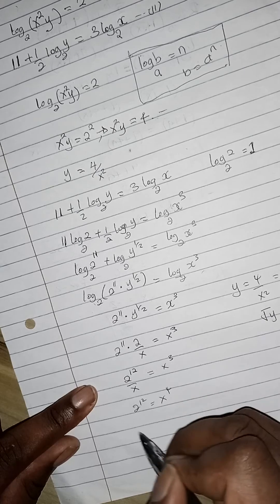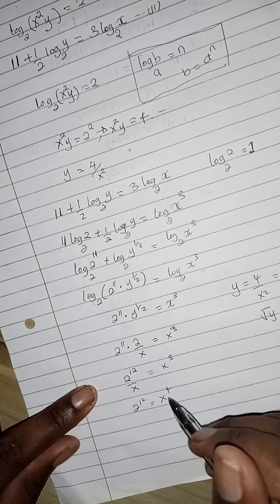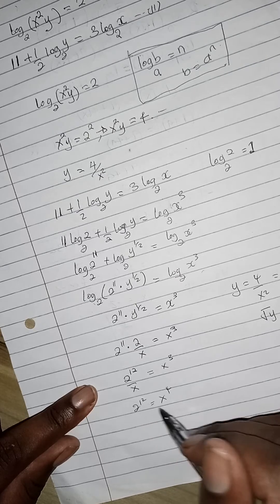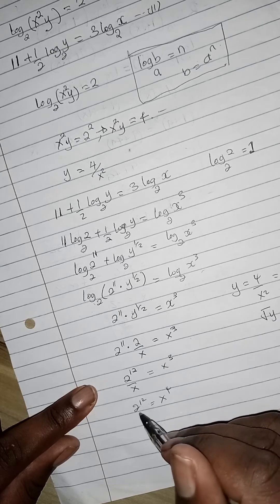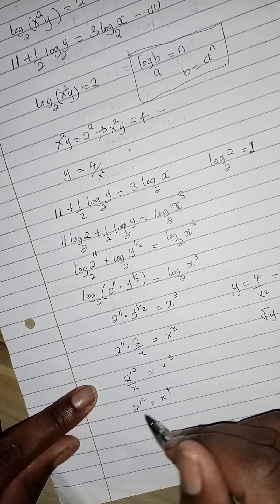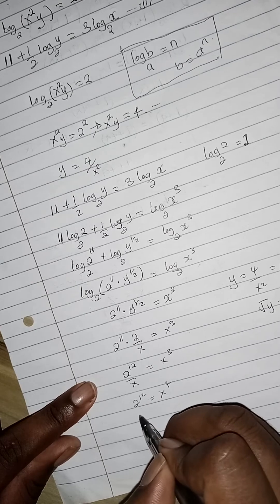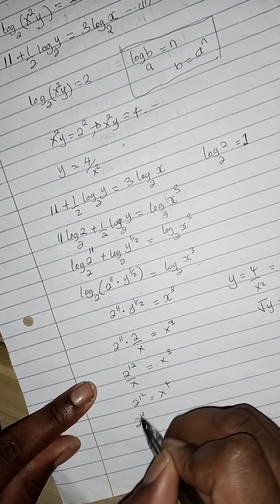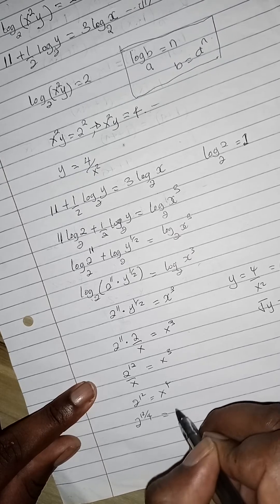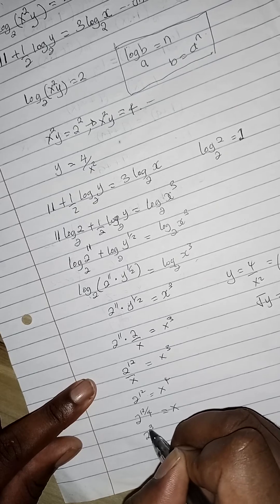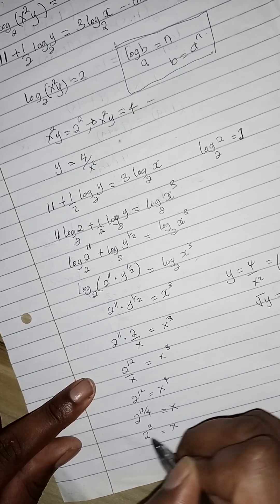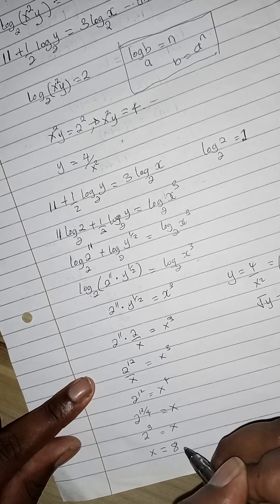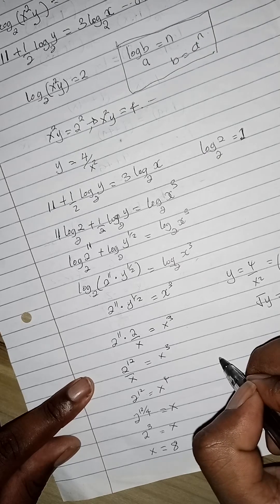This is now an index problem. 2 raised to power 12 equals x raised to power 4. You can take the fourth root of this: 2 raised to power 12 divided by the fourth root equals x. If you do that, you'll get x equals 2 cubed, which is x equals 8.